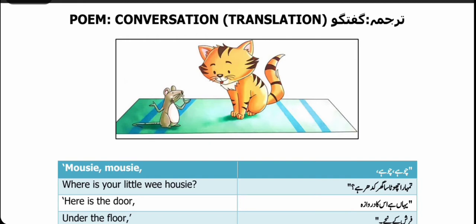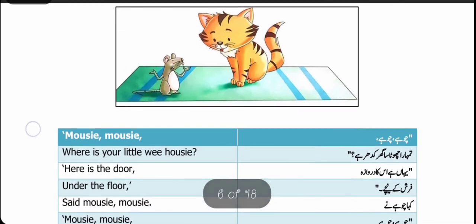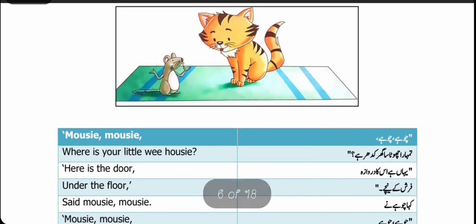The cat very cleverly calls the mouse out from the house. لیکن چوہا بھی اسے اسی طرح جواب دے رہا ہے اور وہ بھی باہر نہیں آ رہا۔ So in this point, we will read the conversation between a cat and a mouse. Children, let's start reading and translating the point.